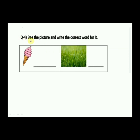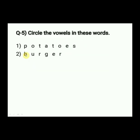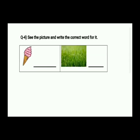Now see question number 4: See the picture and write the correct word for it. See the first picture — what is it? You all know, and it's your favourite too. Write its spelling in the given blank. Now see the second picture. Identify the picture and write its spelling here.